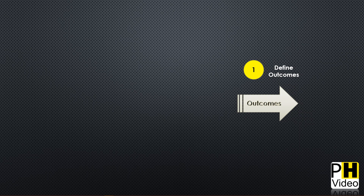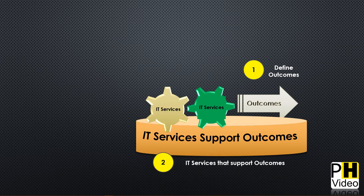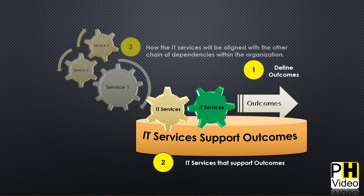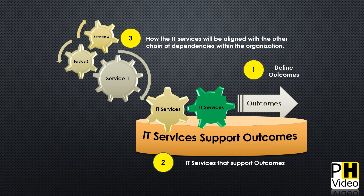Step one: define the outcomes — you want to define your outcomes first. Step two: figure out which IT services support that outcome. Step three: understand how those IT services align with other chain dependencies within the organization. Process mapping and understanding what feeds what within your organization will help you optimize and improve functionality.